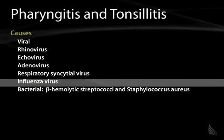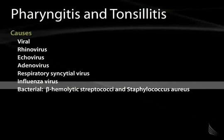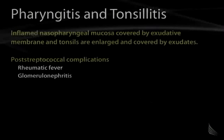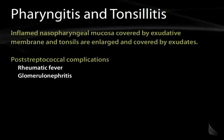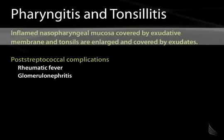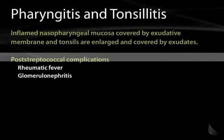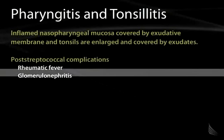When it comes to bacteria, the main players are beta-hemolytic strep and Staph aureus. Clinically, the picture is often the same regardless of etiology, leaving the clinician guessing whether antibiotic therapy is needed. One sees inflamed nasopharyngeal mucosa covered by an exudative membrane, with enlarged tonsils covered by exudates. It is important to differentiate streptococcal from viral pharyngitis, as untreated streptococcal infection can lead to post-streptococcal complications including rheumatic fever and glomerulonephritis.